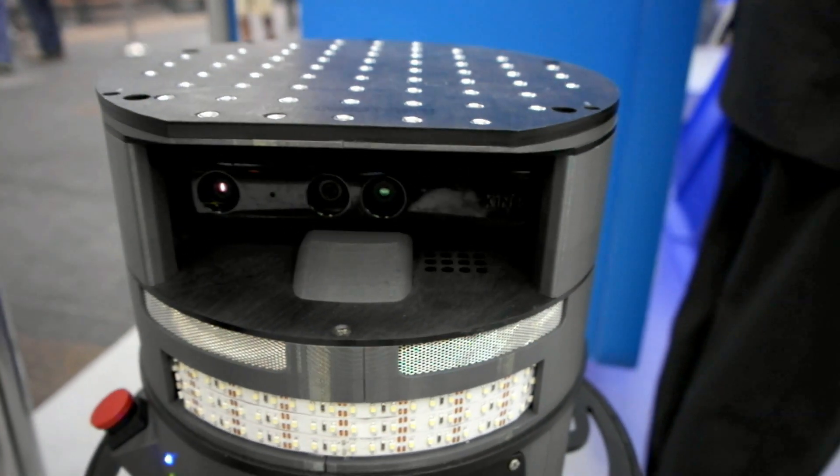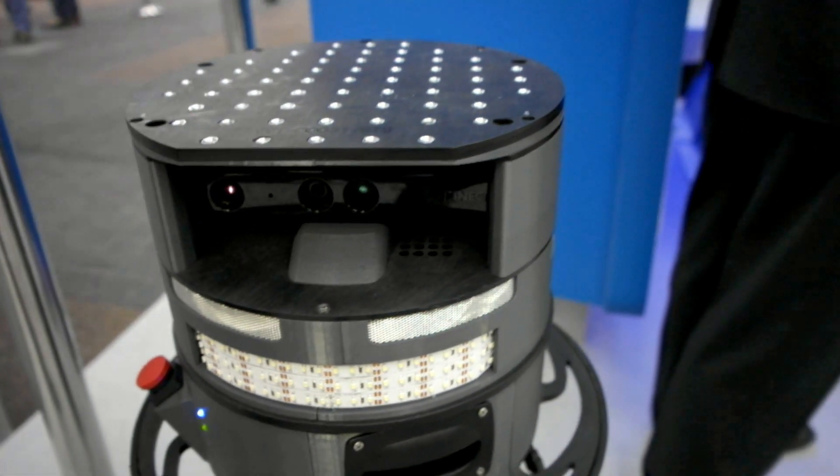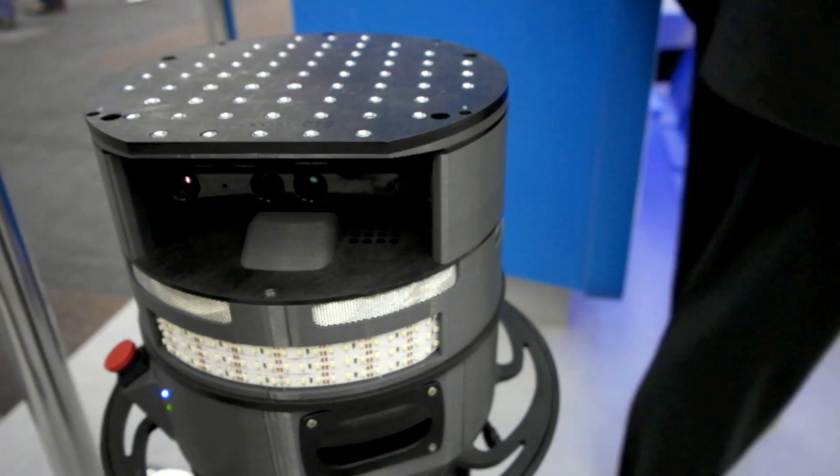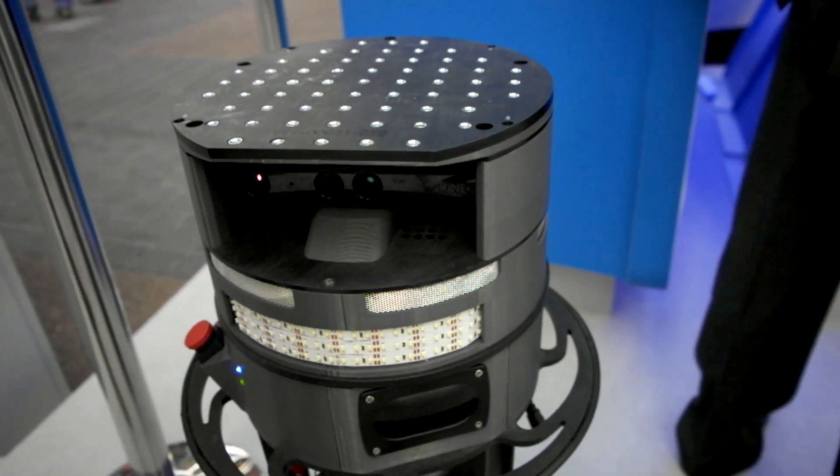So it allows us to do a couple of things. One, orientate ourselves to the shelves. Identify obstacles that are in our way. As well as identify what it is that we're looking at on the shelf. So we use the first generation Kinect now and we're in the process of switching to the new Xbox One.